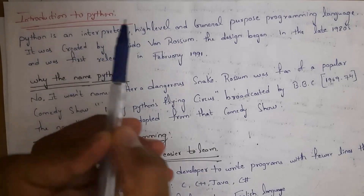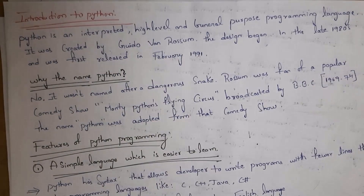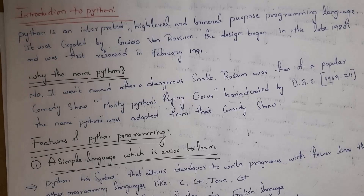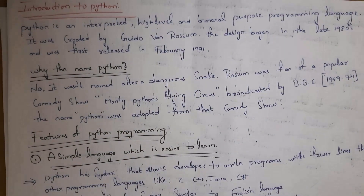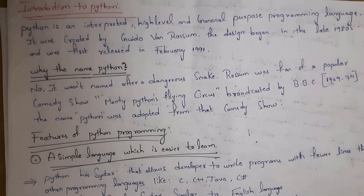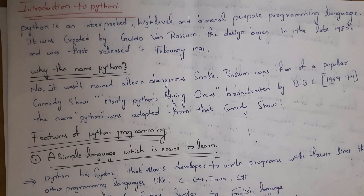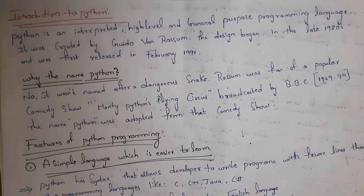Python is an interpreted, high-level, general-purpose programming language. 'Interpreted' means that instead of a compiler like in C, Python uses an interpreter. 'High-level' means the language is understandable by the user — Python has very simple syntax similar to English. 'General-purpose' means by using Python we can develop various kinds of applications.